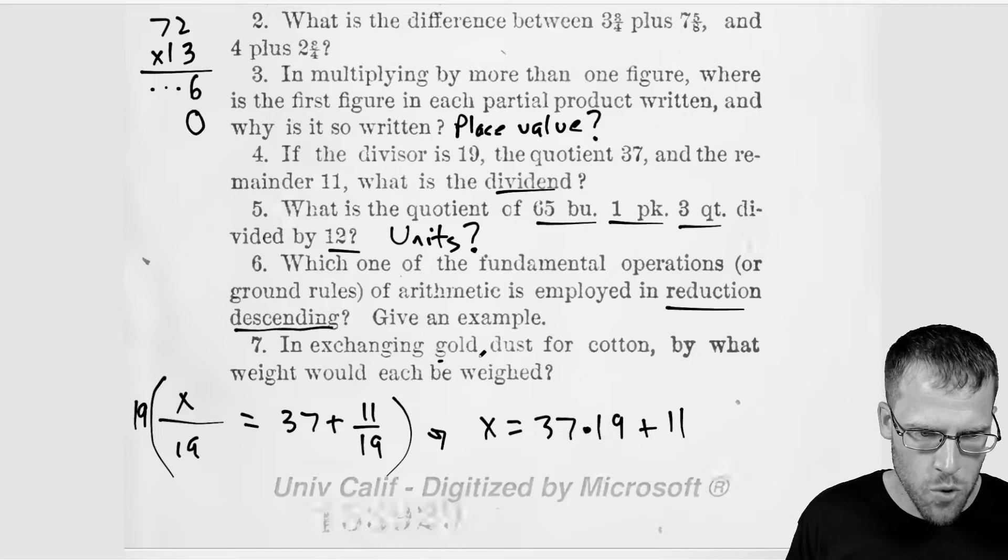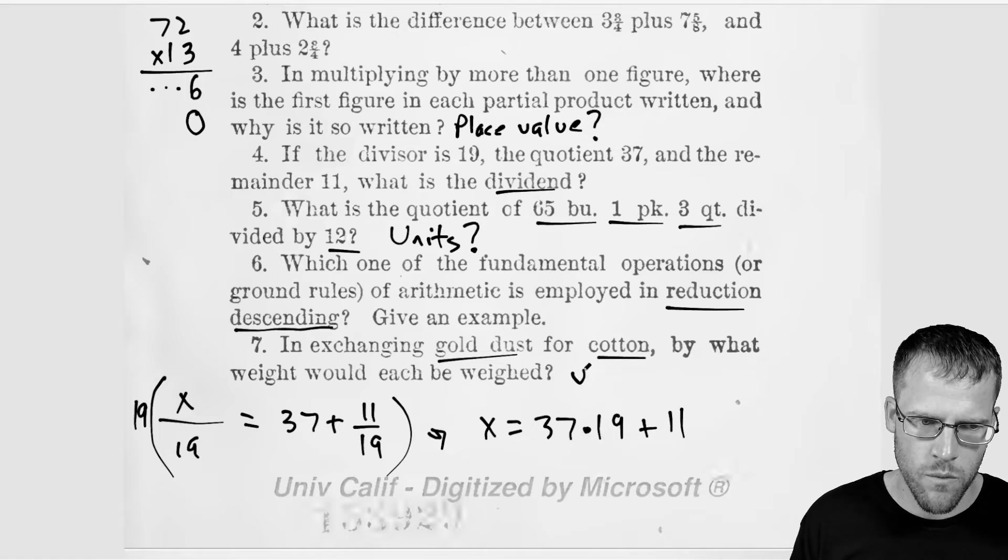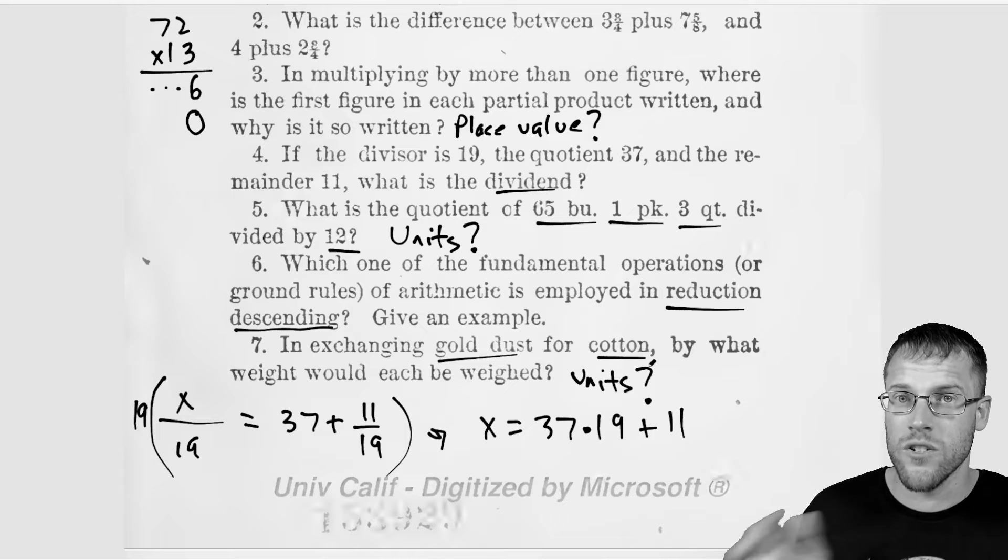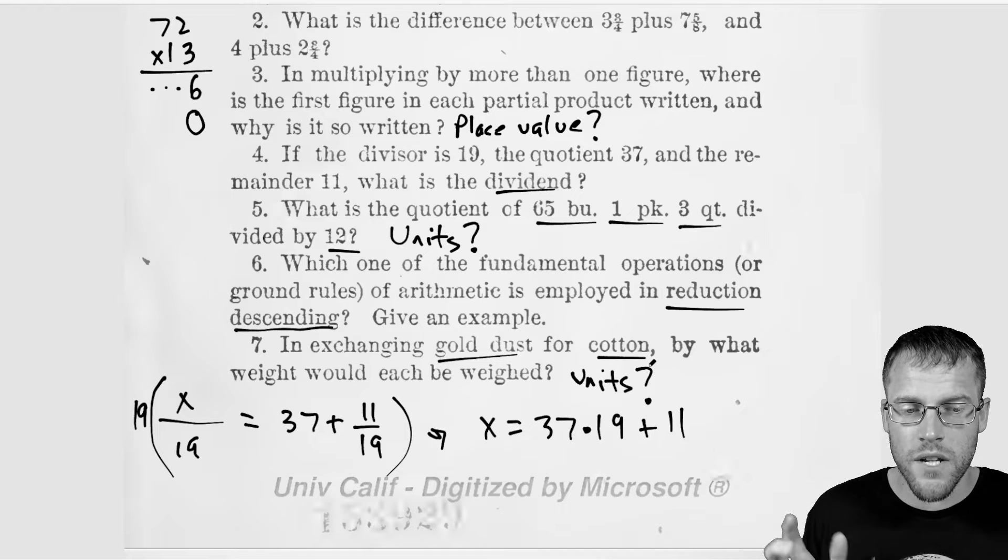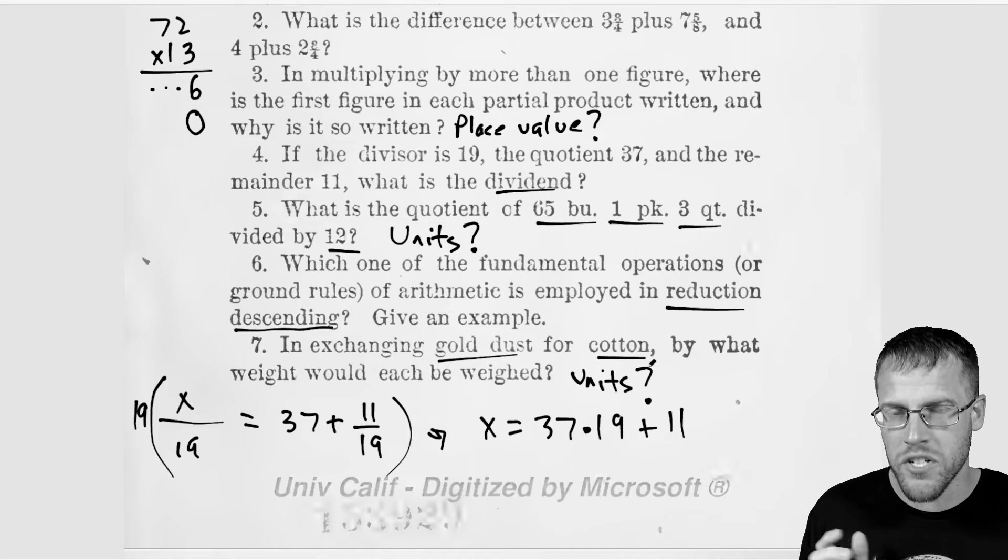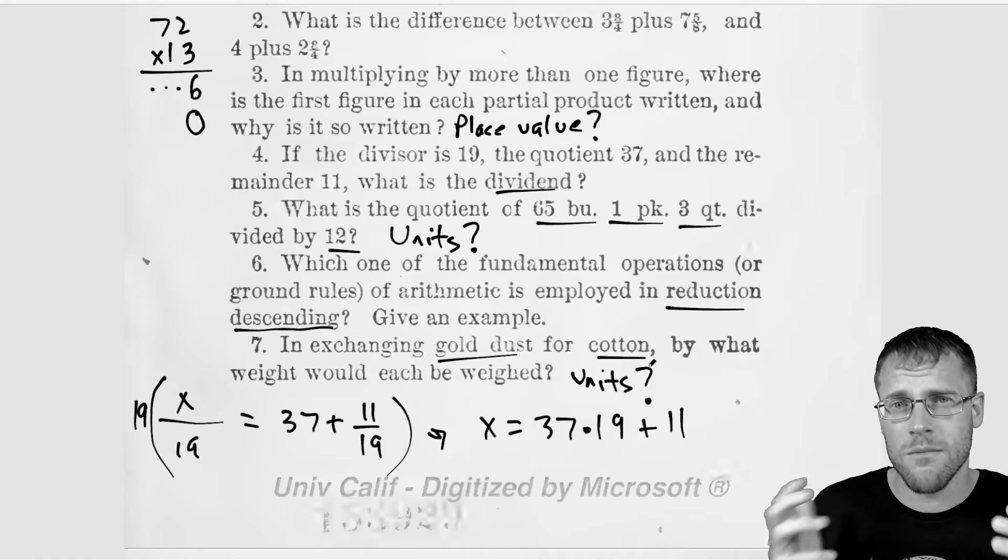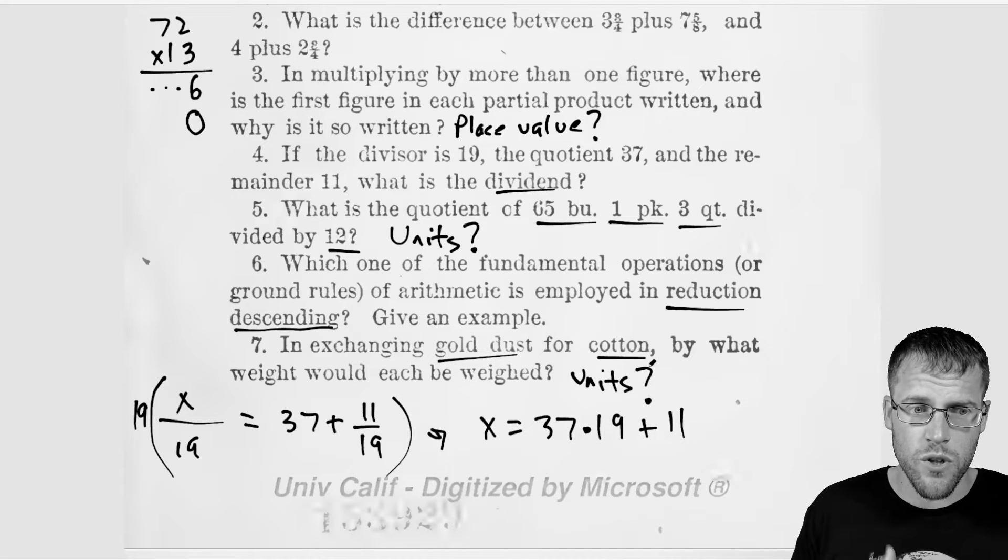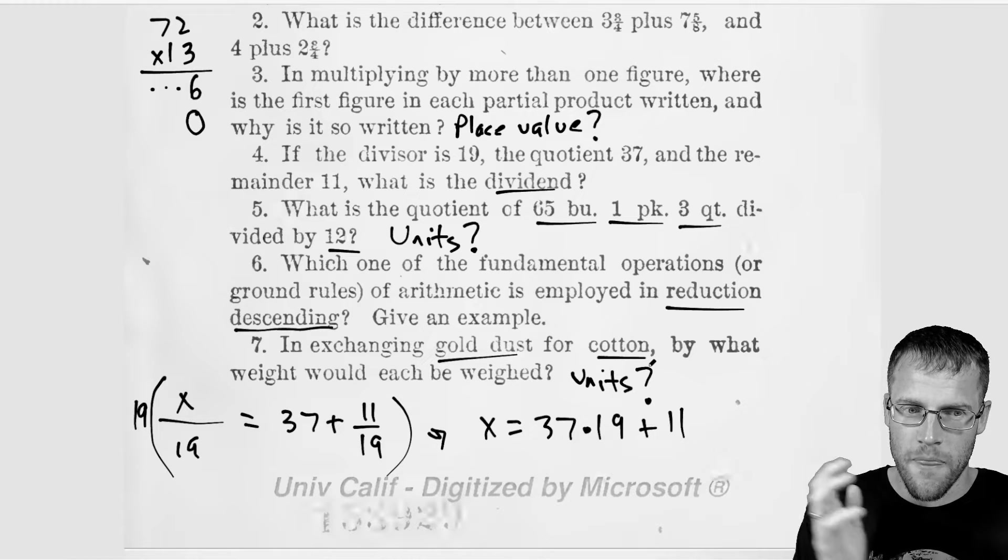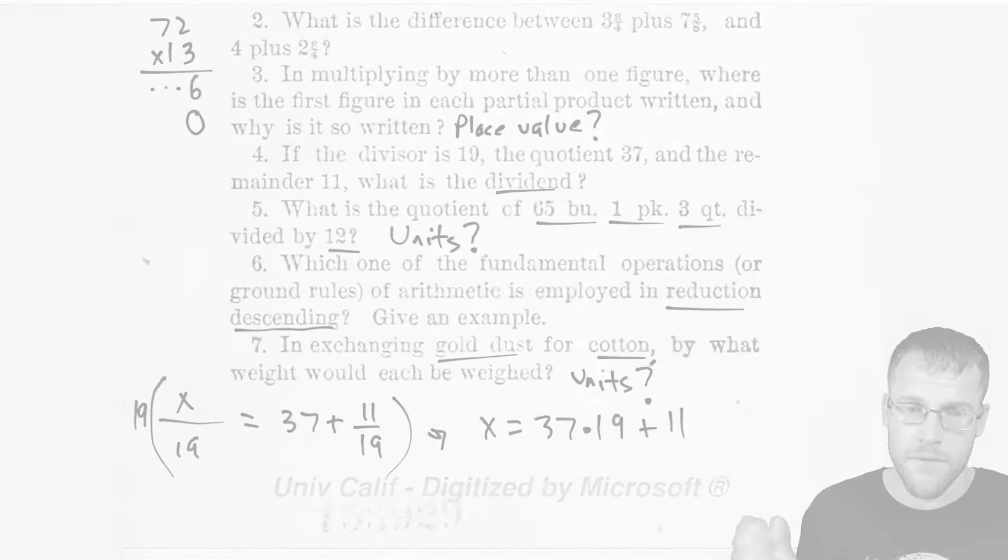In exchanging gold dust for cotton, by what weight would each be weighed? So for this one, once again, units, I don't know what the value of gold dust is. What was interesting to learn, I did a little bit of reading, is that gold dust was one of the main forms of currency, at least in the Idaho region in the 1860s and 1870s. When paper currency was introduced, there was a lot of skepticism over it. People really wanted to stick to the gold standard. They felt that the gold standard was just the way. So that was just interesting to learn. Like, oh wow, gold dust was just a form of currency back then.